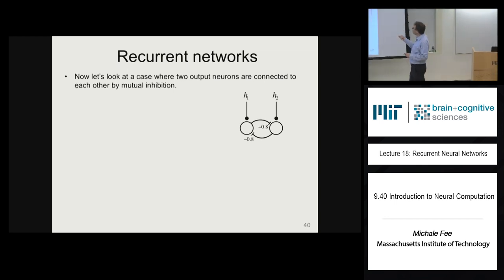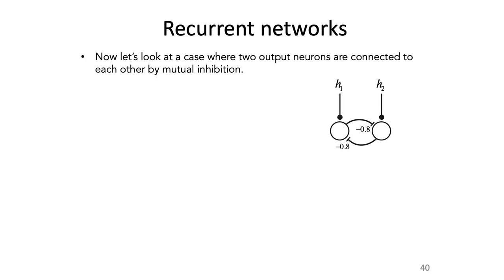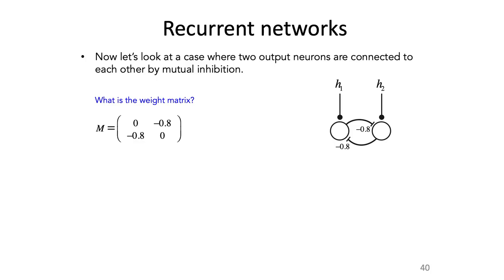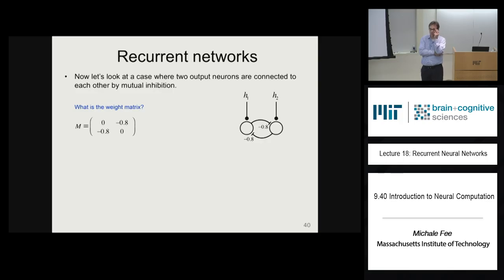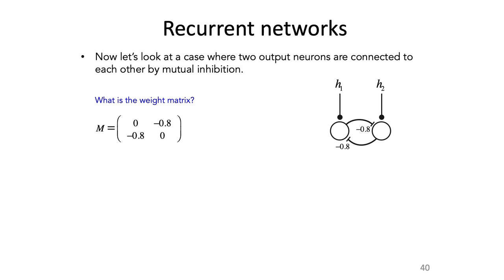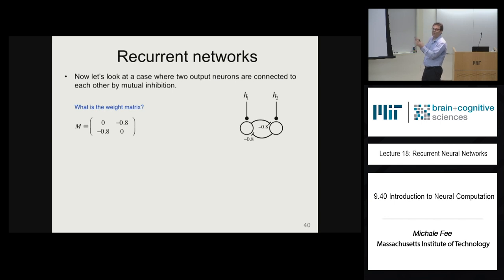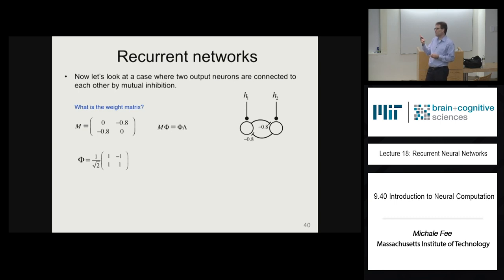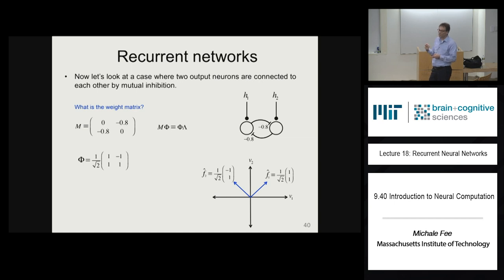Now let's do another network with inhibitory connections — that's called mutual inhibition — making the inhibition minus 0.8. The weight matrix has zeros on the diagonals and minus 0.8 on off-diagonals. What are the eigenvectors? Because the diagonal elements are equal and off-diagonal elements are equal, it's a symmetric network with equal diagonal elements, so the eigenvectors are always at 45 degrees. The eigenvalues are zero plus or minus negative 0.8, which gives plus 0.8 and minus 0.8.